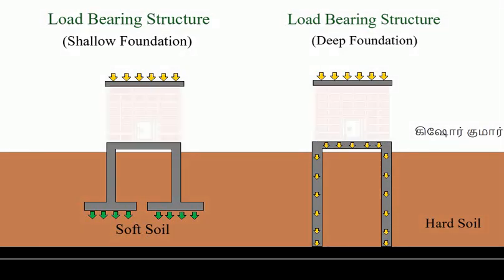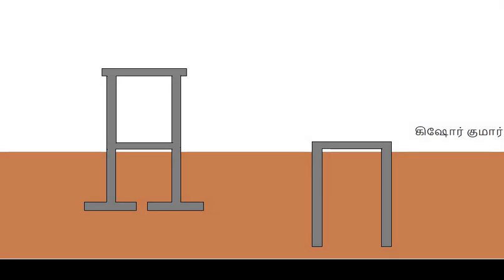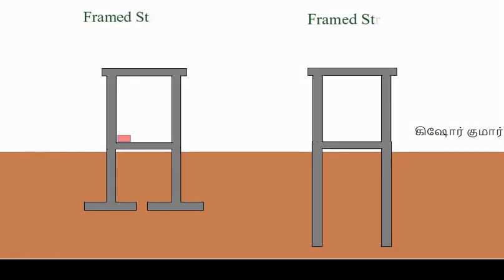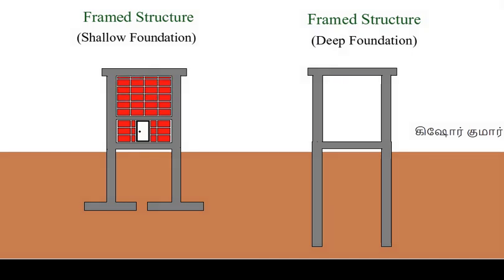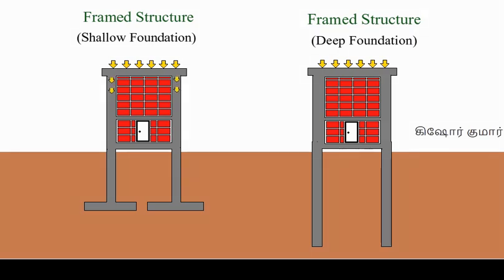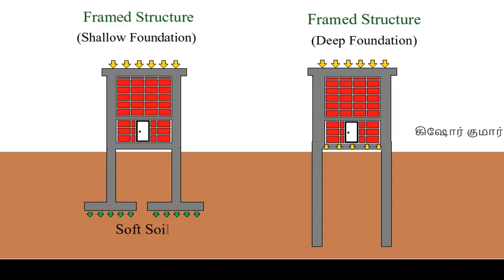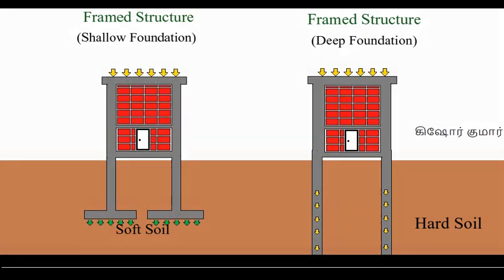In a framed structure, the wall is not a load-bearing element. Instead, the skeletal structure — with columns and beams — bears the load. The mass or weight of the structure is transferred through the columns, then to the footing and to the soil. In deep foundation, structural weight is similarly transferred through the columns to the hard soil. The wall here is just a privacy element and has nothing to do with load-bearing.